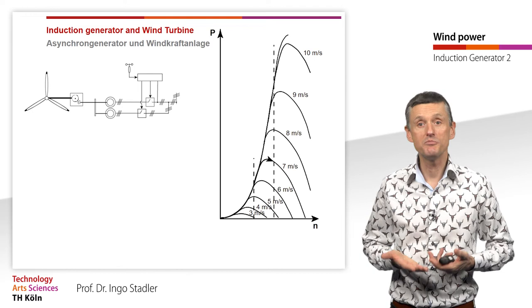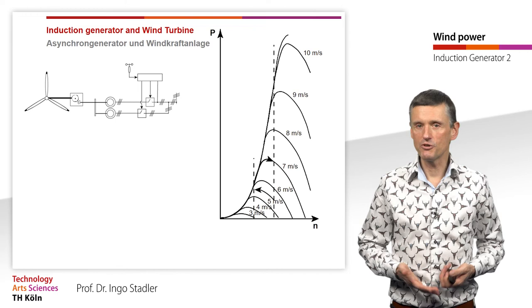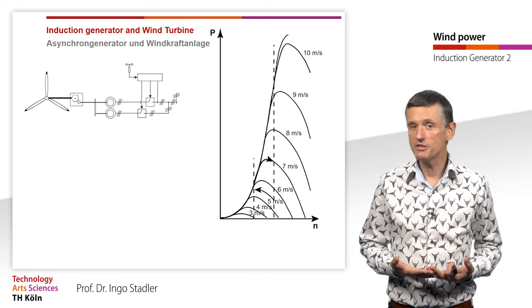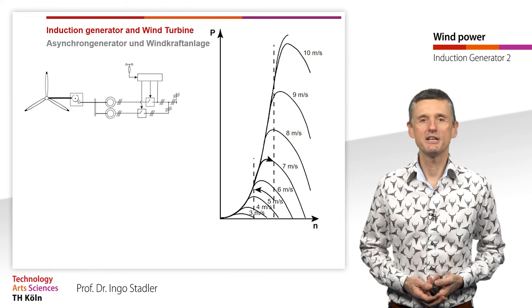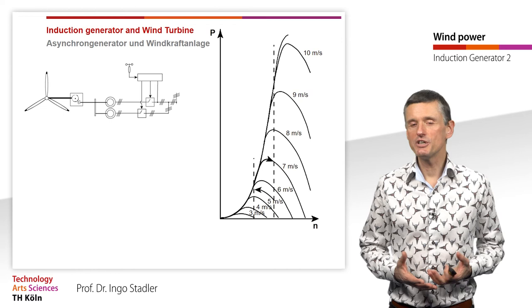And when this wind speed is decreasing again, we follow the hysteresis. And, for example, with 5.5 meters per second, we step back to the lower mechanical speed in order again to increase the efficiency to use more of the mechanical power delivered by the wind and the rotor blades. We already see that is definitely not the optimum. That was only the first attempt.